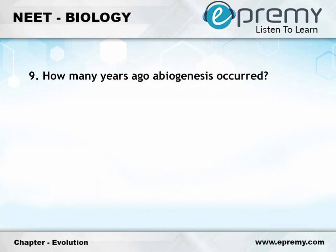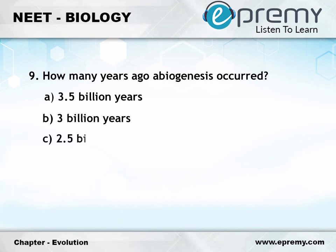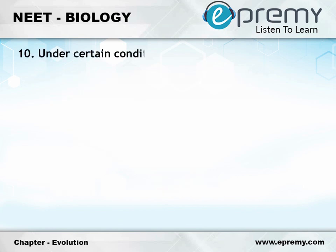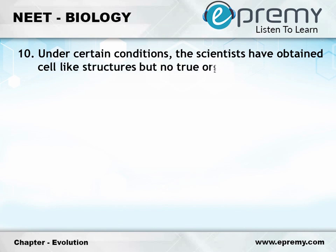Possible origin of life by combination of chemicals under suitable environmental conditions. Question number 9: How many years ago did abiogenesis occur? Option A: 3.5 billion years. Option B: 3 billion years. Option C: 2.5 billion years. Option D: 3.2 billion years. And the answer is Option A: 3.5 billion years.